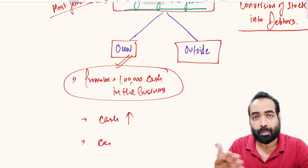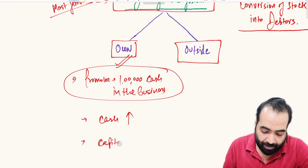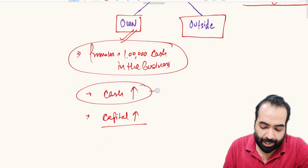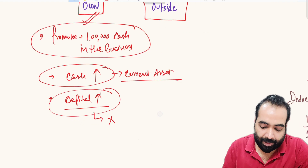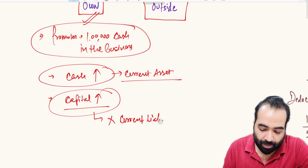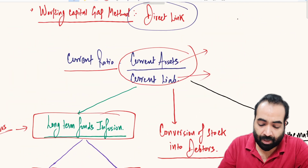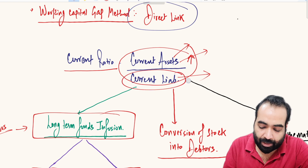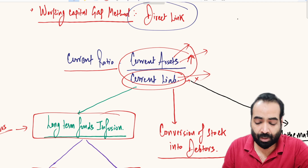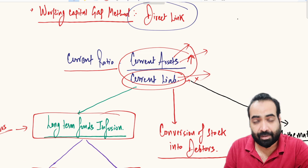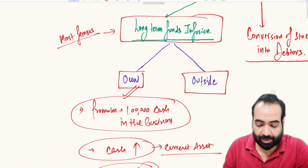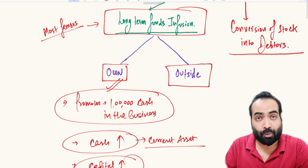Suppose a promoter brings one lakh rupees as cash into the business. His cash balance will increase, and since he has brought in funds as a proprietor, partner, or shareholder, his capital balance will also increase on the liability side. Cash is a current asset, while capital is not a current liability. So the numerator — current assets — will go upward, but there will be no change in the denominator, as current liabilities do not increase. Dividing revised current assets by the same level of current liabilities improves the ratio.